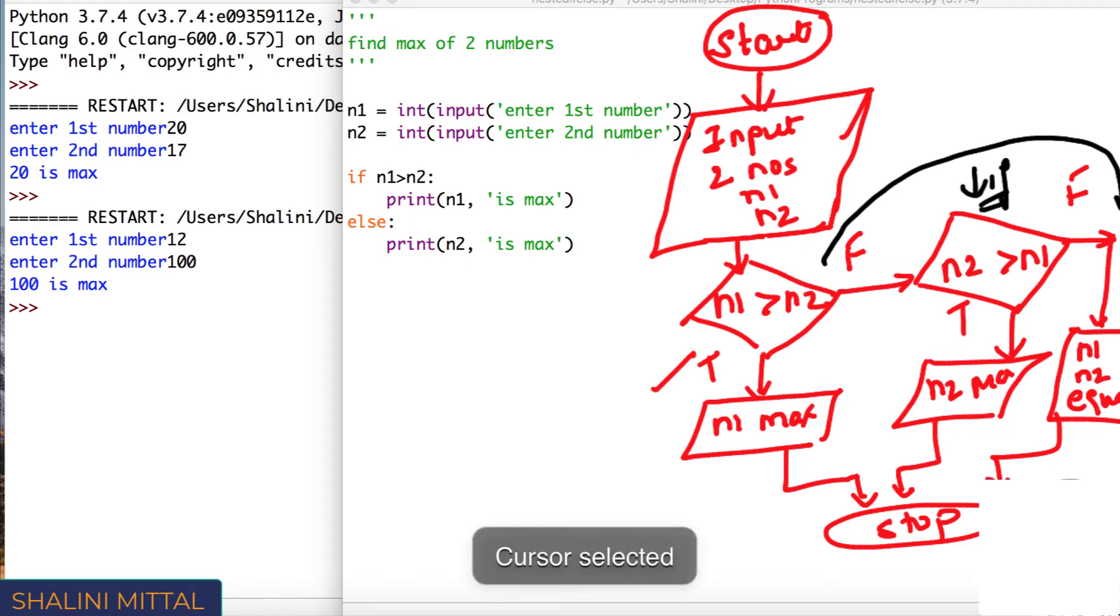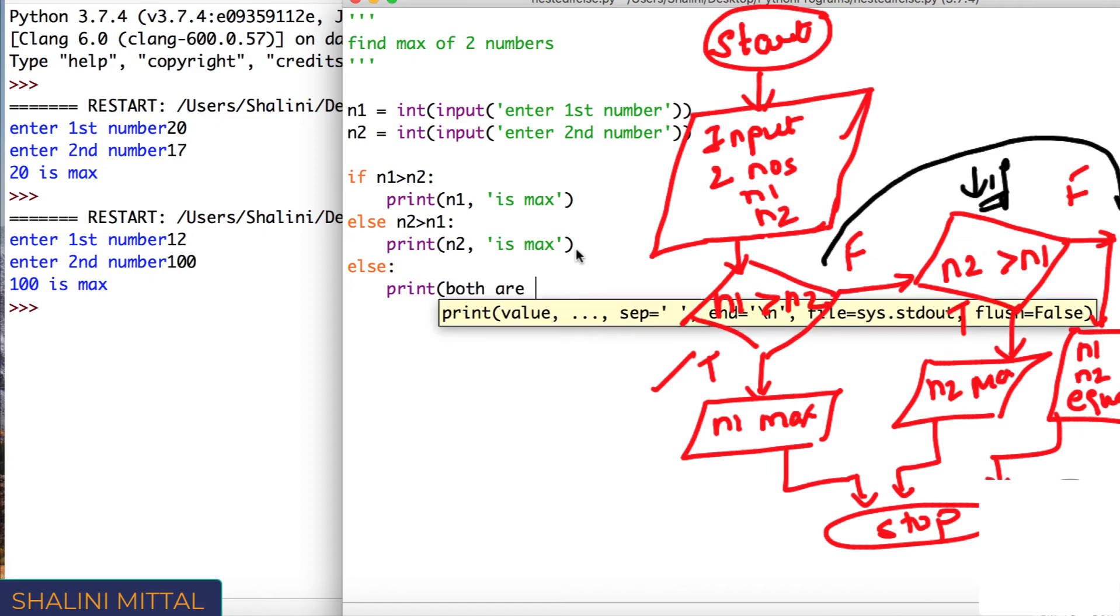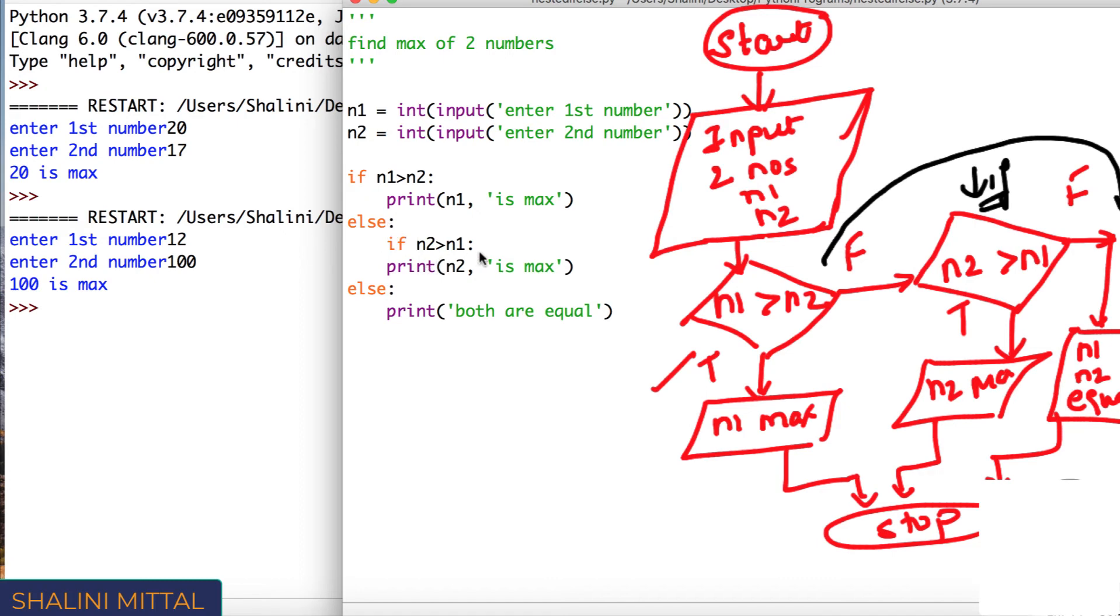This is nested if else. So if n1 greater than n2, I do this. Now I cannot write else n2 greater than n1, else this, print n2 is max, else I'll say print both are equal. Now see, if I do this and if I run, it says invalid syntax because the conditions always comes with if. So I can say else if n2 greater than n1, then print n2 is max, else print both are equal.